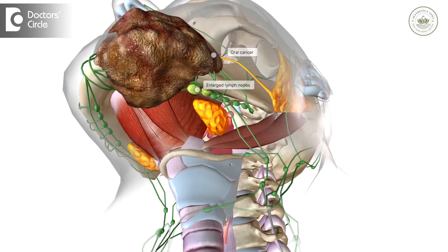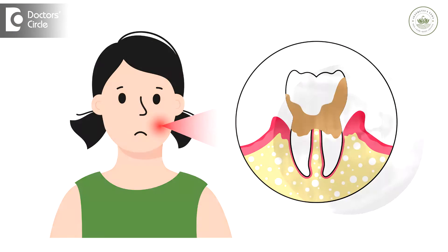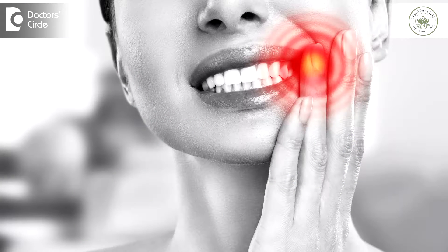They end up eating a large part of your bone, as a result of which the symptoms are generally not very soon visible. These are identified on routine x-rays, or when a tooth is mobile, or in case of some pain associated with chewing.